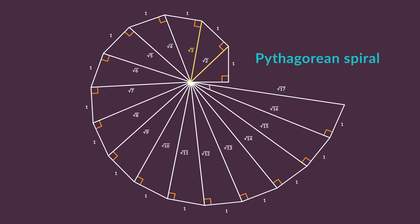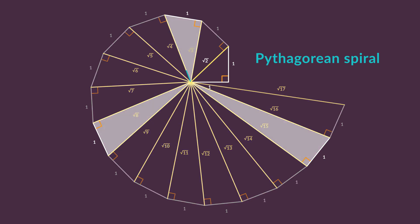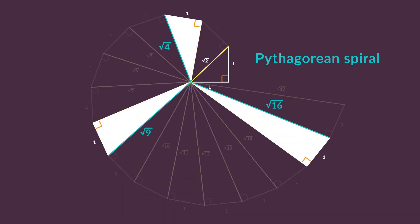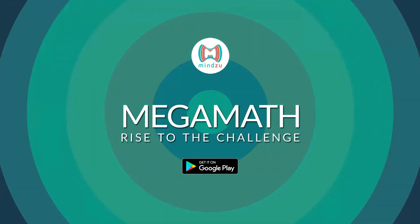This is called a Pythagorean spiral. The square root of any whole number that is not a perfect square is an irrational number, so many of these lengths are irrational. The exceptions, of course, are the roots of perfect squares such as 4, 9, and 16.